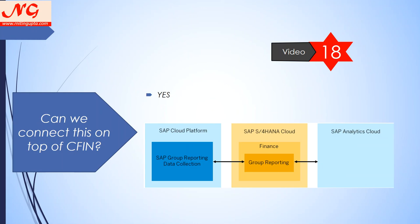Can we connect Group Reporting on top of Central Finance? Yes, and it is more valuable that way. You bring data from ECC or non-SAP systems into Central Finance, then implement Group Reporting on top of it, so your source of data is one single system. Previously, consolidation systems like FIN-CS or Hyperion Financial Management required connecting all sources separately, but now all transactional data comes into one system. This diagram shows Group Reporting for data collection on a cloud platform, with SAP Analytics Cloud as a planning tool on top.